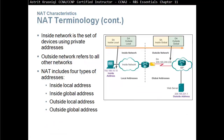The inside network is the set of devices using private addresses. The outside network refers to all other networks. NAT includes four types of addresses: inside local address, inside global address, outside local address, and outside global address.